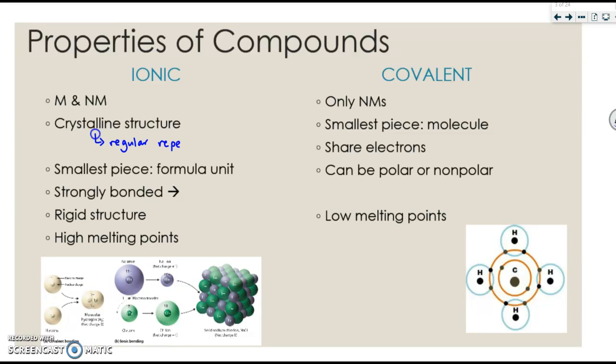So they go Na-Cl, Na-Cl, Na-Cl. The smallest piece for an ionic compound is a formula unit. That's going to be important later.